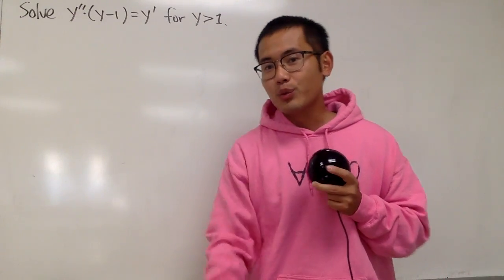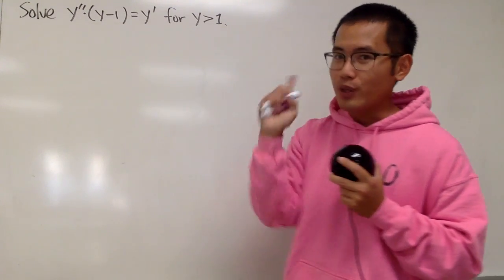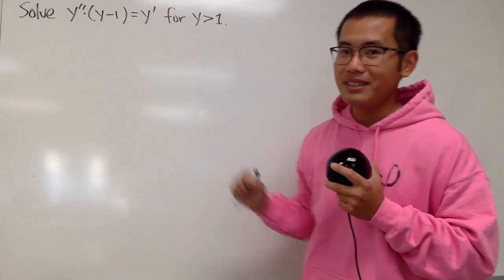Well, notice that if y is exactly equal to 1, the left-hand side is just going to be 0, and when we differentiate 1, we get 0, namely y' is 0. So that's easy, right?